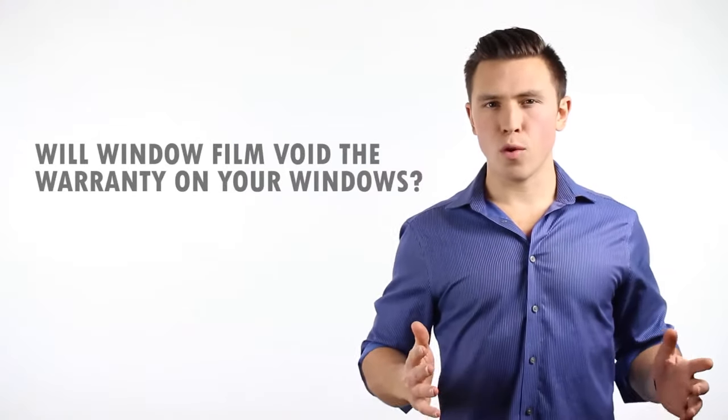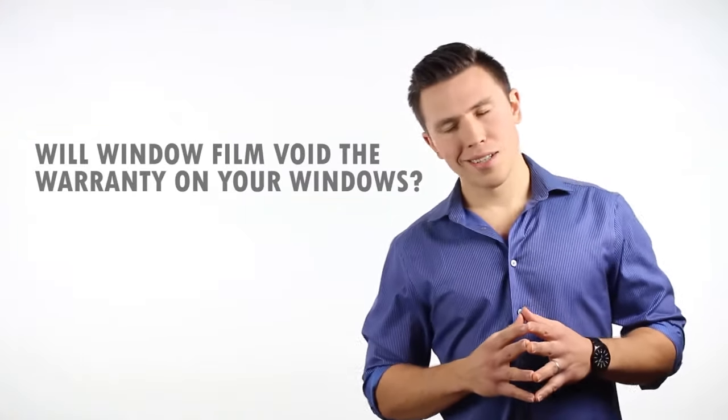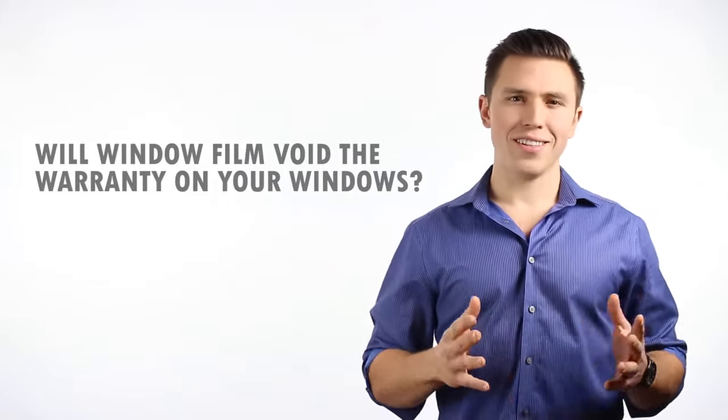Will window film void the warranty on your windows? Unfortunately, yes. Window manufacturers don't want anything to be put or applied on their windows. But we have a solution for that. Our manufacturers for our film will adopt your current windows warranty for up to 10 years. This protects against glass breakage and seal failure. So if anything happens to your window under its current warranty, our manufacturer will replace your window and replace your film at no cost to you.